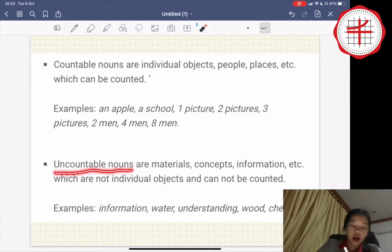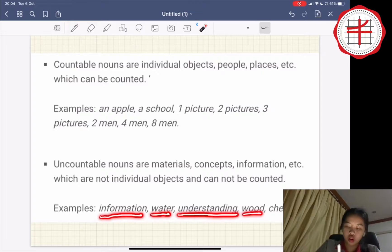And uncountable nouns are materials, concepts, information, which are not individual objects and cannot be counted. Examples: information, water, understanding, wood, or cheese.